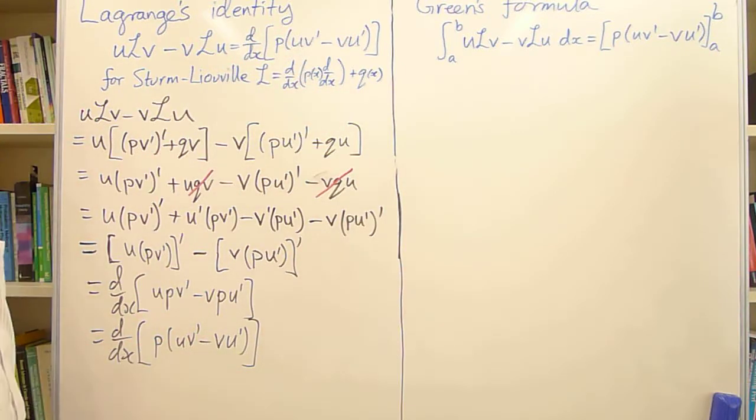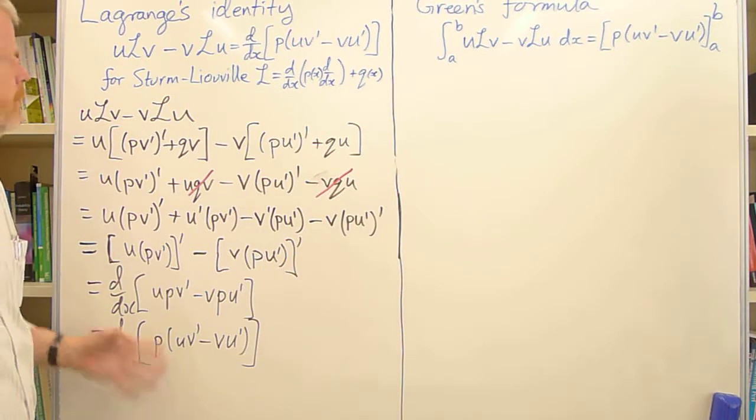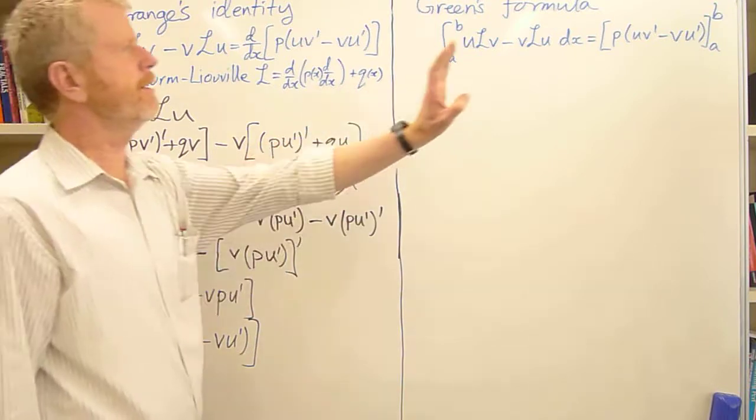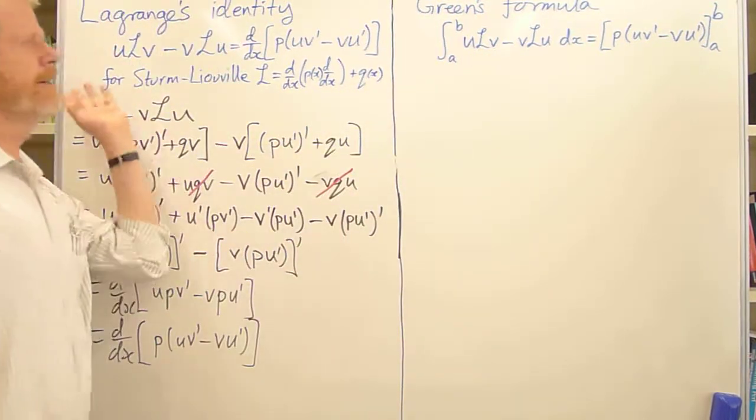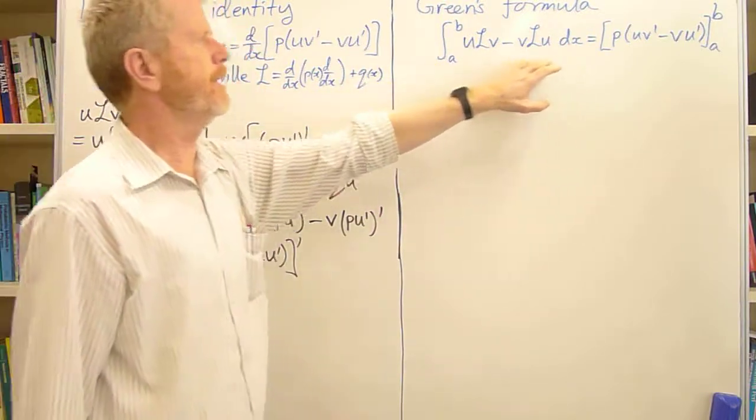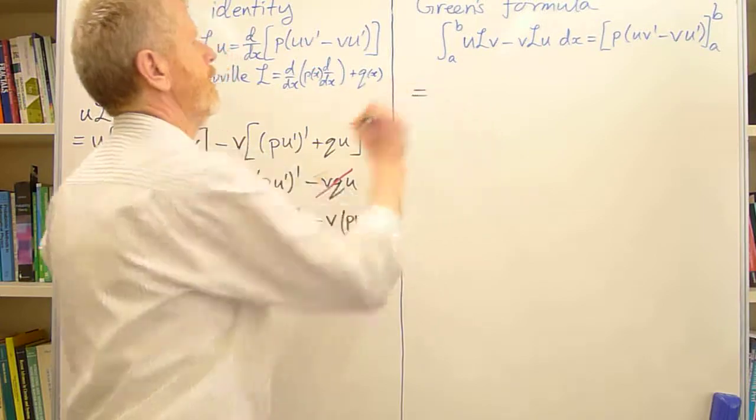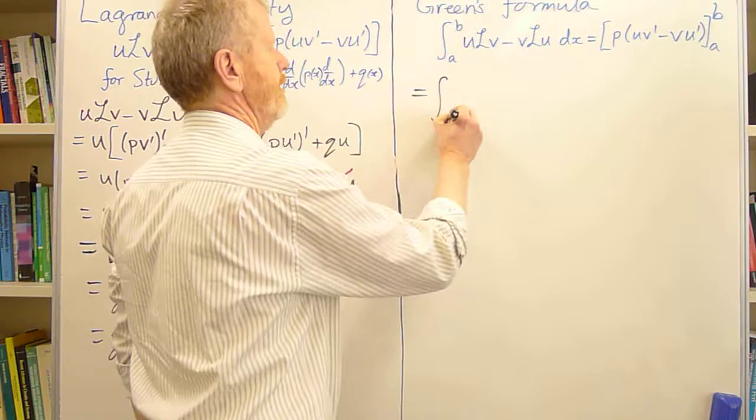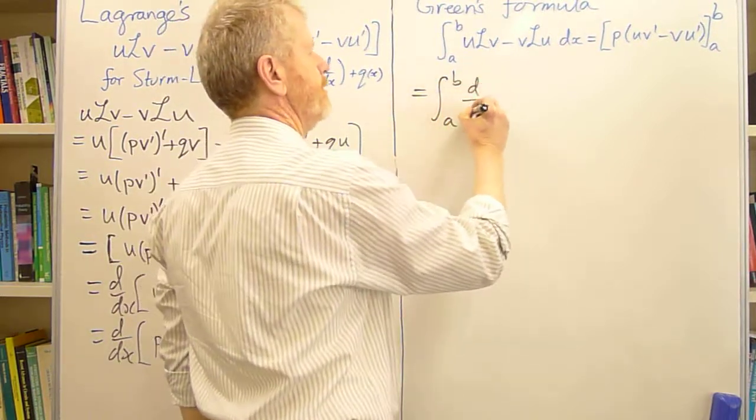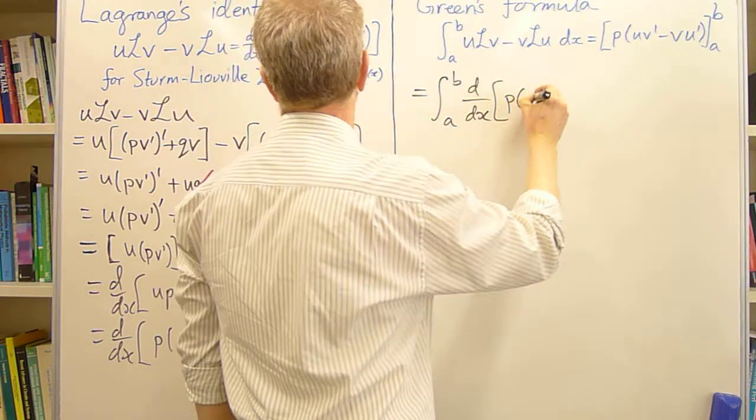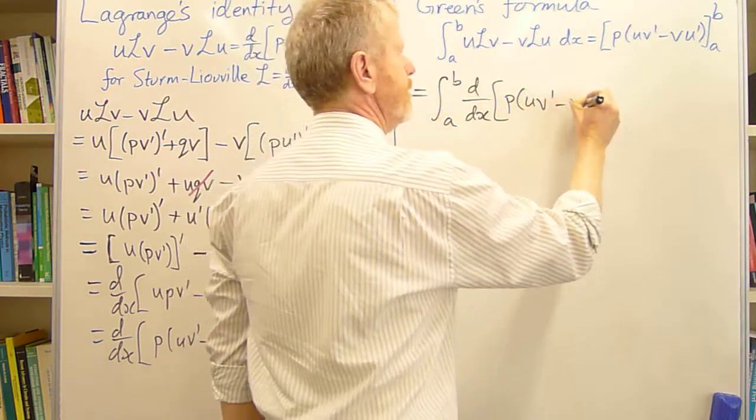And this holds throughout the domain. Now, we're going to use this mostly in its integrated form. So we take Lagrange's identity and integrate it over the domain. So here's the left-hand side integrated from a to b. And what we've just established is the integrand here is a derivative. It's d/dx of p[uv' - vu'].